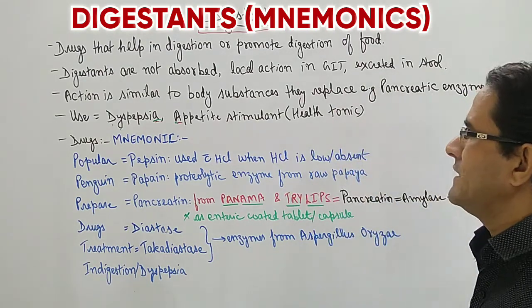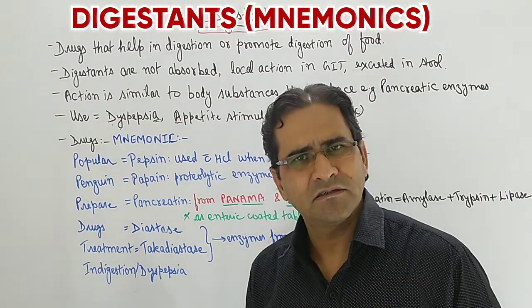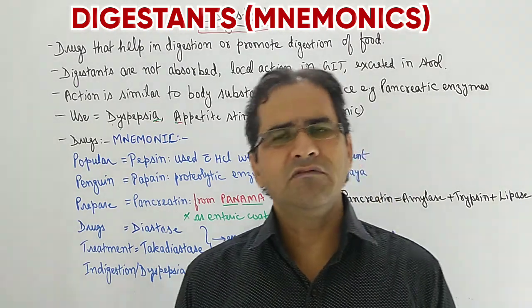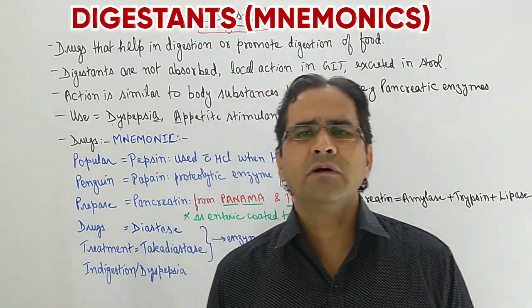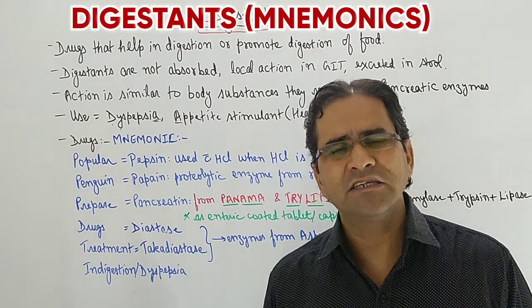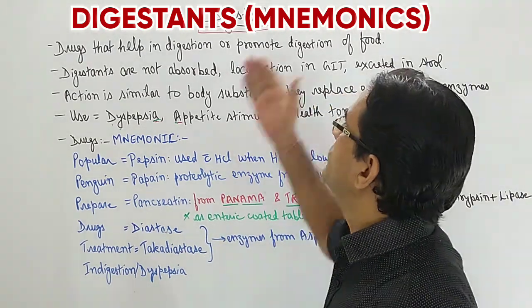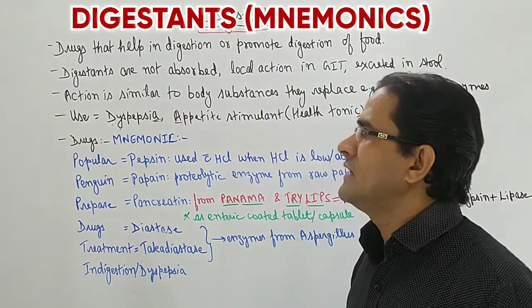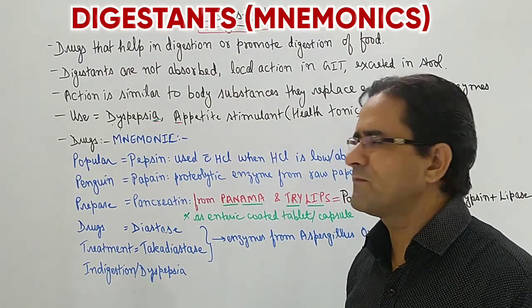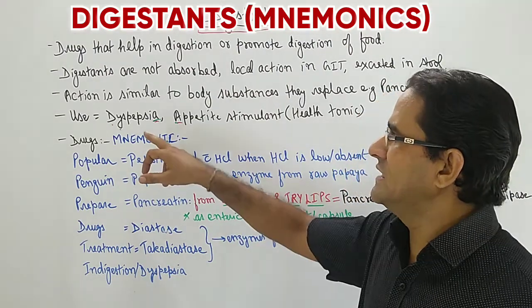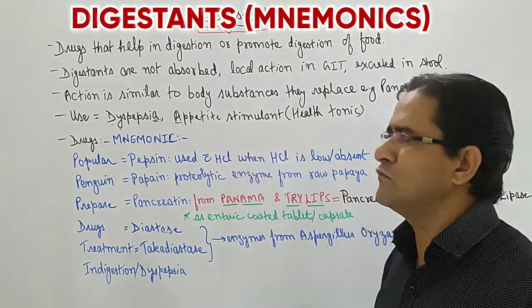For example, pancreatic enzymes — in conditions where an individual is not able to digest food due to enzyme deficiency, we have to give digestants. The uses of digestants are dyspepsia and appetite stimulant, which can also be termed as a health tonic.